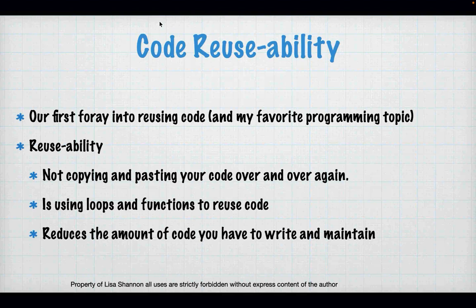It costs money to write code and it costs money to maintain code. There's a metric: if you catch a code problem in requirements, it's going to cost you a dollar. If you catch it in design, it's going to cost you $10. If you catch it in coding, it's going to cost $100. And if you catch it at a customer site, it's going to cost you $1,000. The less code you can write, the more likely it is that you won't get to that point where it's costing you a lot of money to fix a problem.